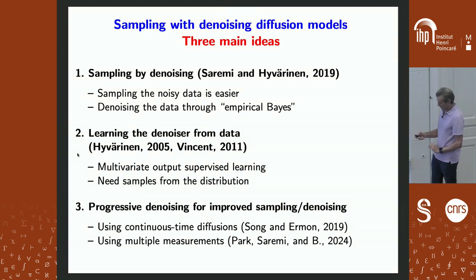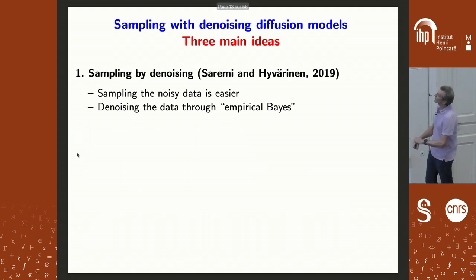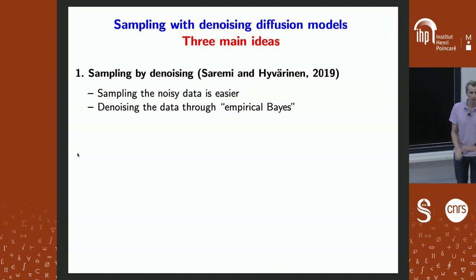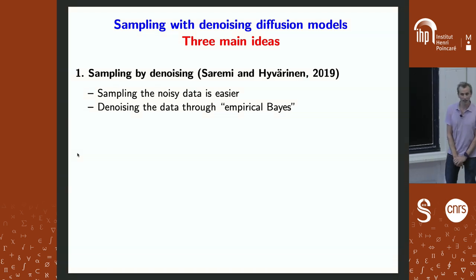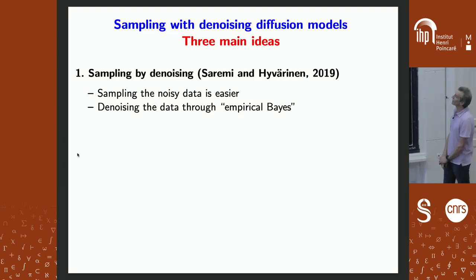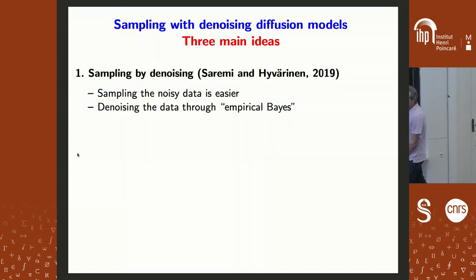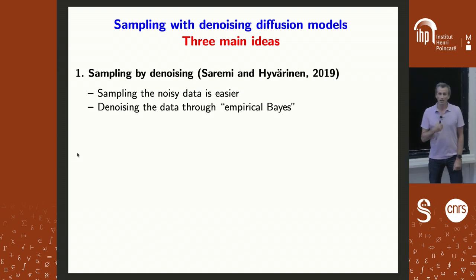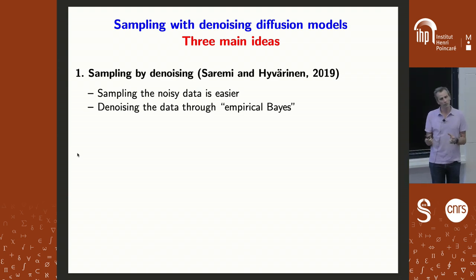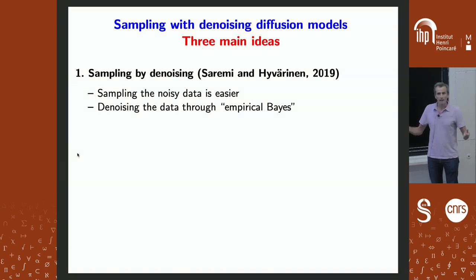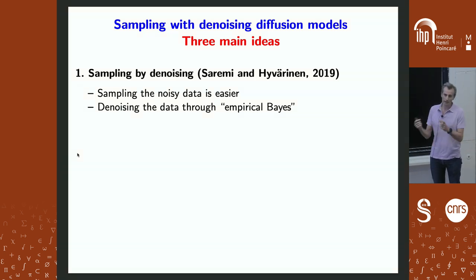There will be three ideas in this talk — all of them are not mine, so if you're not happy with them, complain to the authors — but they are very good ideas, and I will show at the end one of our ideas. The first idea: we're not going to try to sample using Langevin. We're going to use a very different process — we're going to add some noise, generate noisy data, and hopefully go from the noisy data to the clean data. The idea is that in the noisy data, things should be easier to sample.